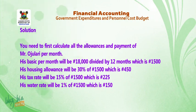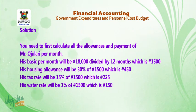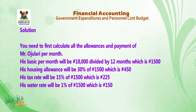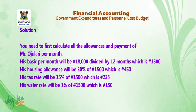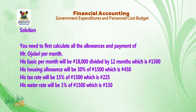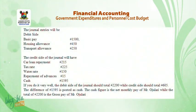Additional deductions are: (e) tax at the rate of 15% of basic pay; (f) water rate at 1% of basic pay. Housing allowance will be 30% of ₦1,500, which is ₦450. Tax will be 15% of ₦1,500, which is ₦225. Water rate will be 1% of ₦1,500, which is ₦15.